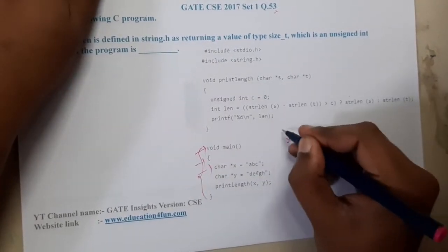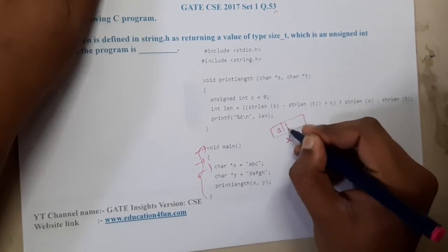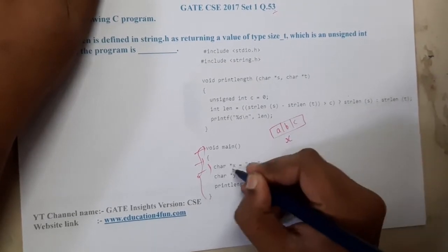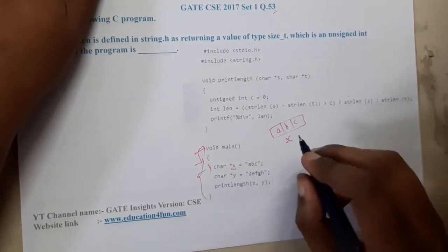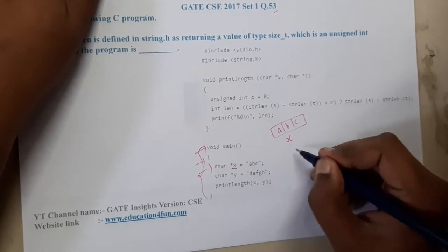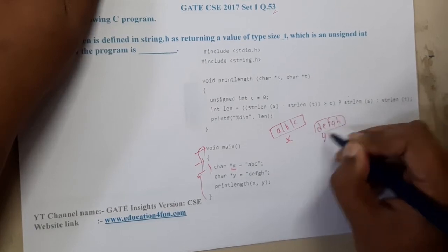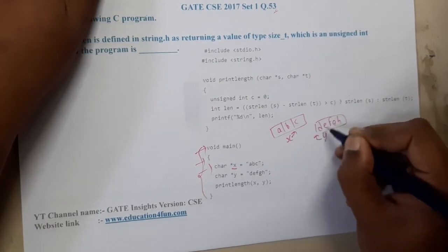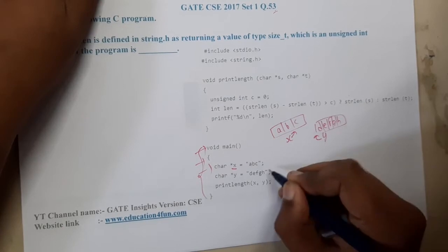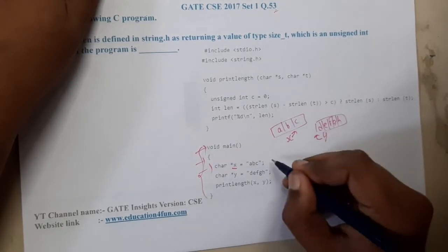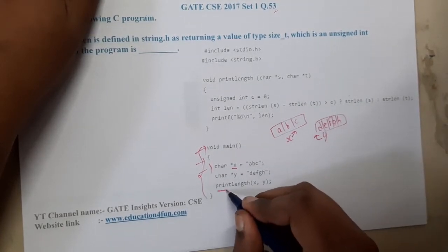Here we are creating a variable x which is storing "abc". You can assume that as a pointer, but I will be assuming it as an array directly. Similarly, y is also one more pointer which is having the address of this particular array. So basically now we are trying to do print_len of x comma y.